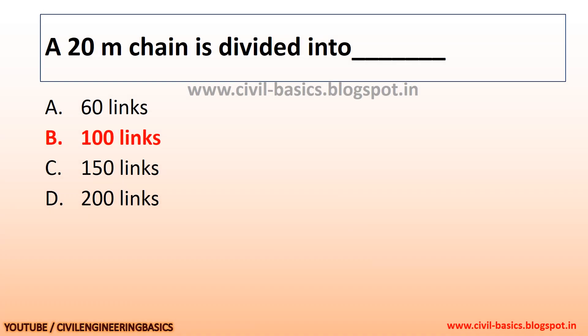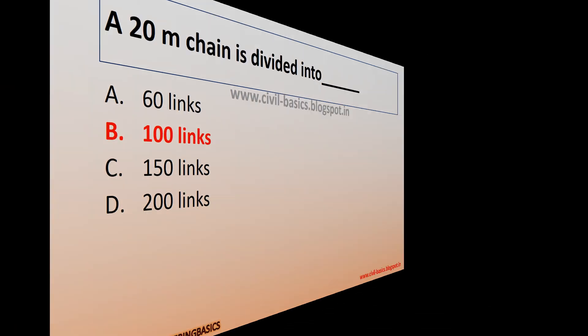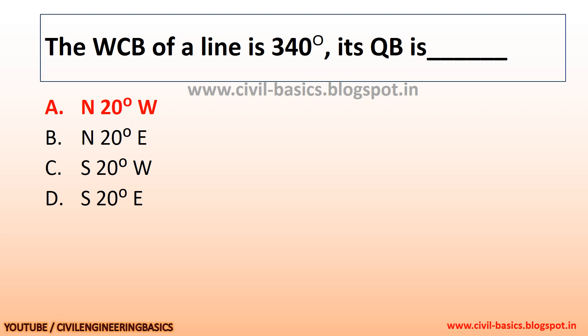A 20m chain is divided into 100 links. The whole circle bearing of a line is 340°, so its quadrant bearing is North 20° West.